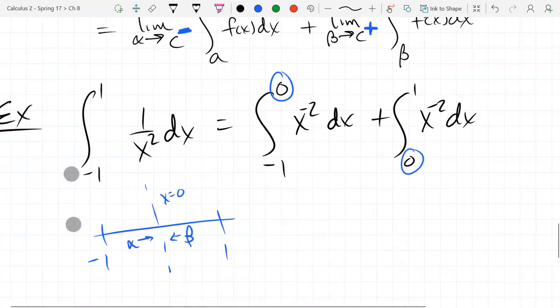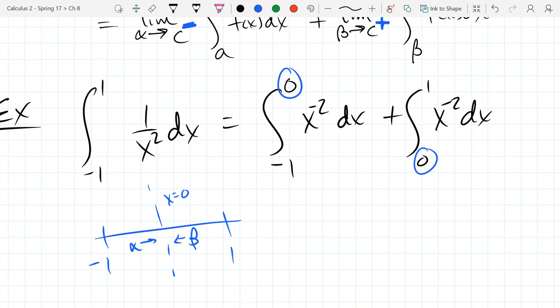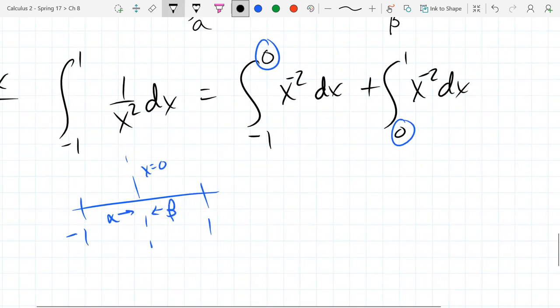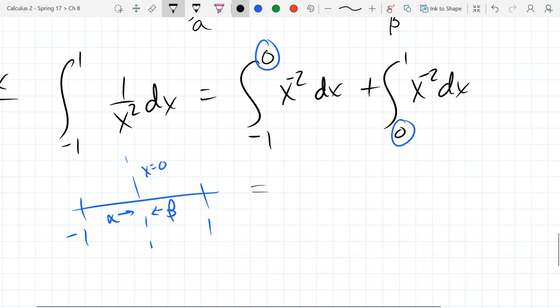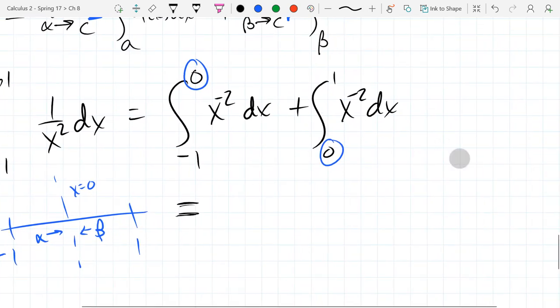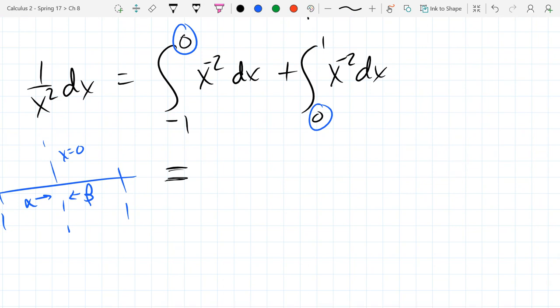So we're going to finish the improper integral. We split it on the vertical asymptote and now we have basically two separate integrals to do. What we need are two limits.